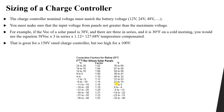For example, if you select a charge controller with a maximum PV input voltage of 150 volts, the calculated worst-case voltage of 127.68 volts is lower than 150 volts, so this charge controller can be used. However, if you use a charge controller rated at only 100 volts, that would create an overvoltage condition that may damage the controller. We must ensure the controller's rated maximum voltage is higher than the worst-case PV voltage.